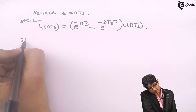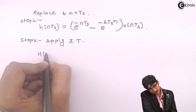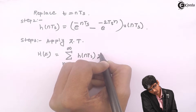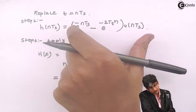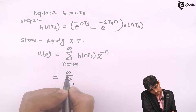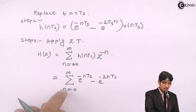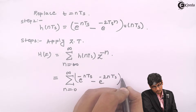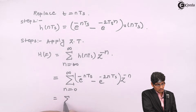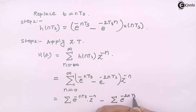Now for step 3, apply the Z transform. H(Z) = summation from N = -infinity to +infinity of H(NTs)·Z^(-N). Because u(NTs) is present, the limit starts from 0, so it becomes summation from N = 0 to infinity of (e^(-NTs) - e^(-2NTs))·Z^(-N). Splitting the summation: sum of e^(-NTs)·Z^(-N) minus sum of e^(-2NTs)·Z^(-N).